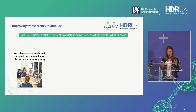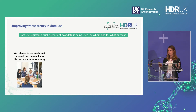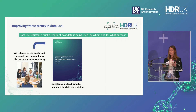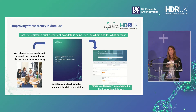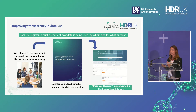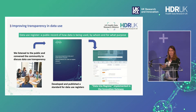The Alliance has listened to the public and convened a community of experts — data custodians, researchers, and the public — to discuss data use transparency and what was needed. We developed standards for data use registers, which are public records of how data is being used, by whom, and for what purposes. This is available for data custodians to publish their data uses in a standard way that is clear for researchers and the public. We then took that standard and used it to inform the Innovation Gateway data use register, which Alliance members can now use.